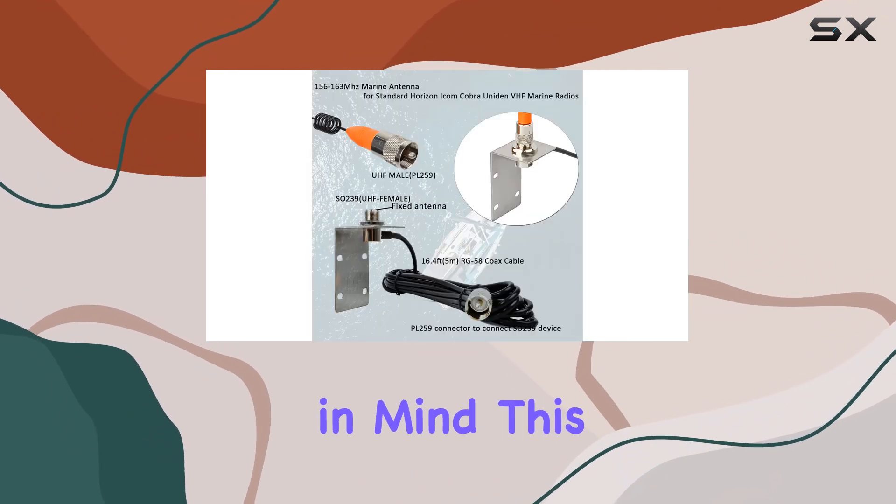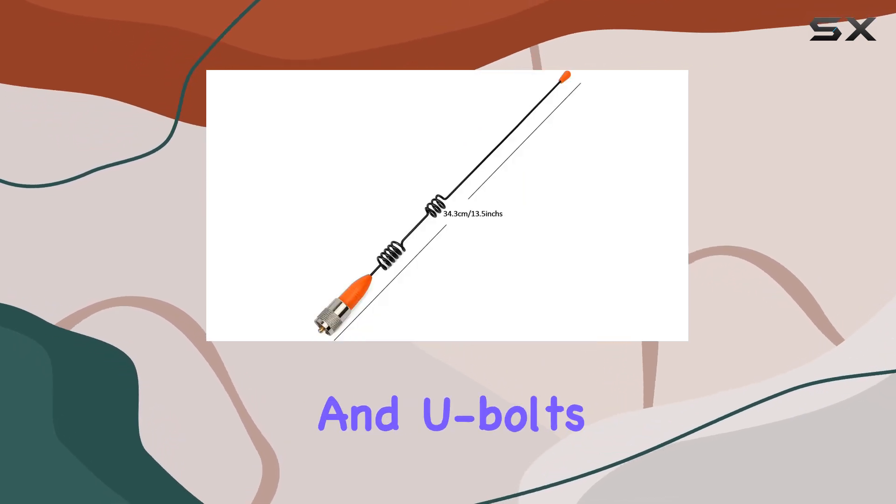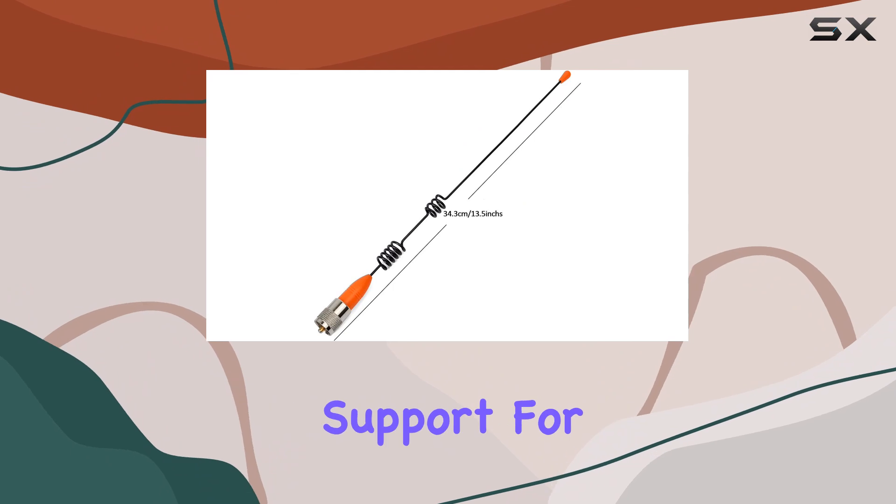Crafted with durability in mind, this low-profile antenna boasts a stainless steel L-bracket and U-bolts, providing sturdy support for pole mounting.